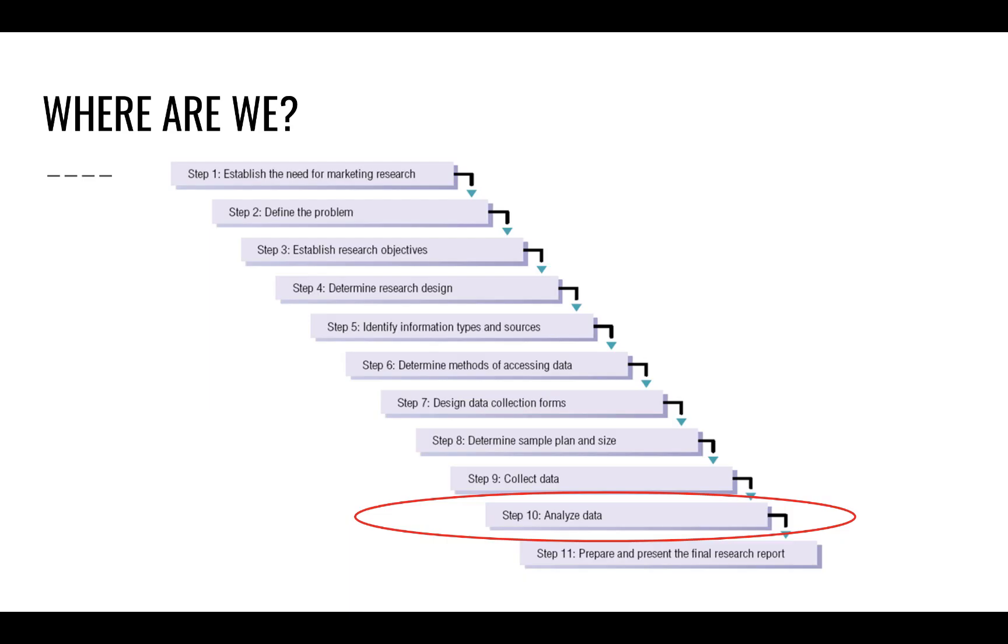If we look at where we are in the whole marketing research process from beginning to end, we're actually already fairly far along. We're already at step 10, which is analyzing data. Of course, for your group project you will still be waiting for your data to come in, but as soon as that comes in you will have the skills to start analyzing it. The next four classes will cover different types of research analysis you can do in SPSS to turn your data inside out and have some cool findings.